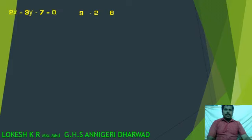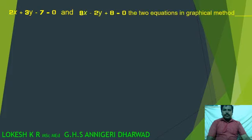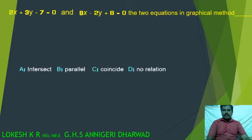2x plus 3y minus 7 is equal to 0 and 9x minus 2y plus 8 is equal to 0. The two equations in graphical method is dash.